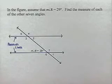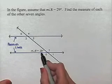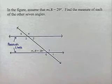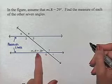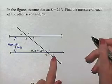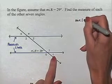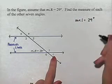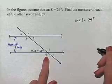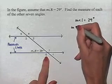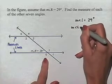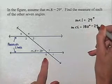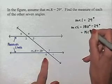Now let's look at the relationship when there's a transversal between parallel lines. In the figure, assume that the measure of angle 8 equals 29 degrees. Find the measure of each of the other seven angles. At this first intersection, if the measure of angle 8 is 29 degrees, then we can find the measure of angle 1 using the fact that it is a vertical angle — it will be congruent and therefore have the same measure. Next, the measure of angle 6 is found using the fact that angle 6 together with angle 8 form a straight angle, meaning they're supplementary. So the measure of angle 6 equals 180 degrees minus 29 degrees, which is 151 degrees. Since angle 7 is a vertical angle with angle 6, the measure of angle 7 is also 151 degrees.